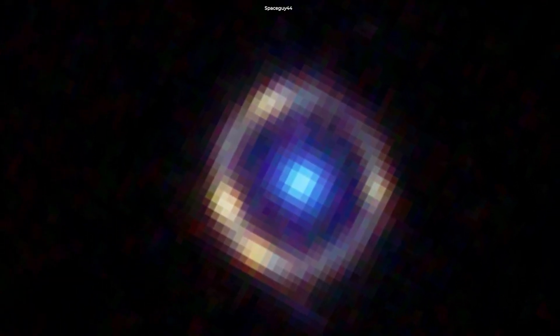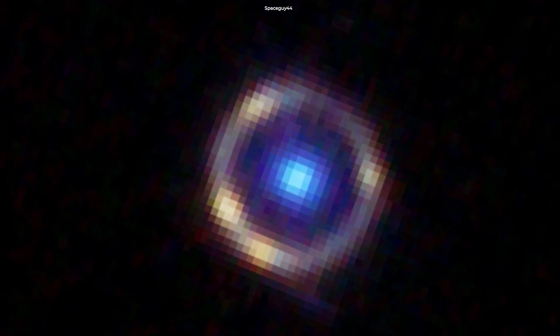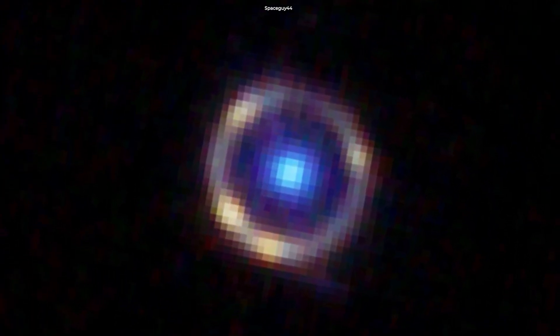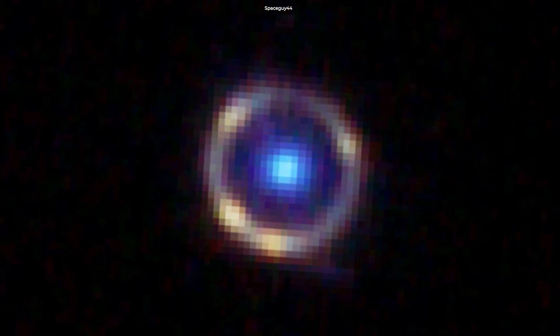JO418 galaxy, shown as a ring, is oriented exactly behind another galaxy, the bright blue light at the center of the ring that is doing the bending of light.